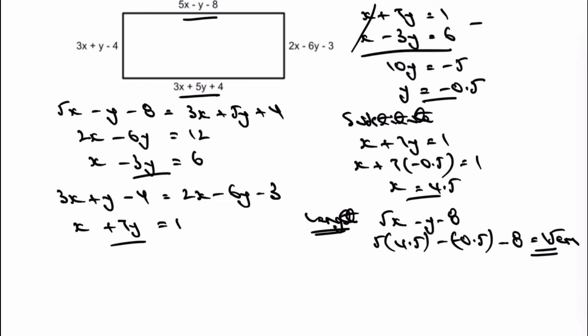And then if I want to work out the width, okay, I'm going to again just substitute into one of the equations. I happen to choose 3x plus y equals 4. So therefore, again, I know my value of x and I know my value of y. So I've got 3 times 4.5 plus negative 0.5 equals 4. And that's going to give me a value of 9 centimeters.